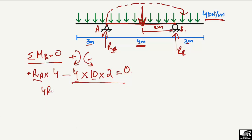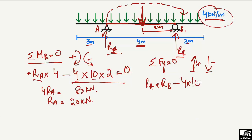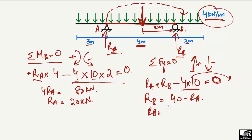Solving the moment equation: RA × 4 = 4 × 10 × 2, so 4·RA = 80, giving RA = 20 kilonewton. Then applying summation of vertical forces equal to zero: RA + RB − 4 × 10 = 0, so RB = 40 − RA = 40 − 20 = 20 kilonewton.